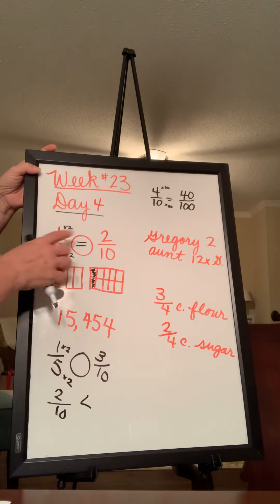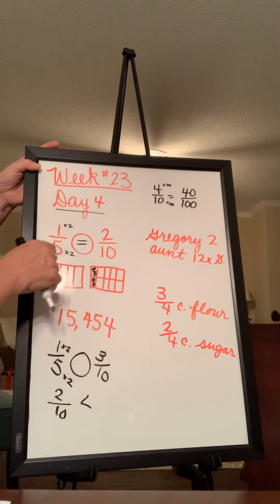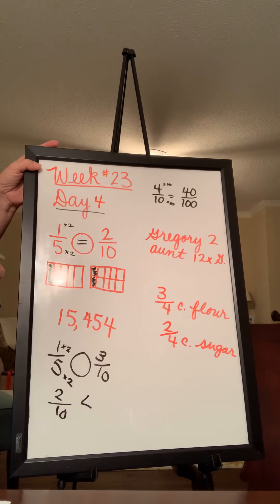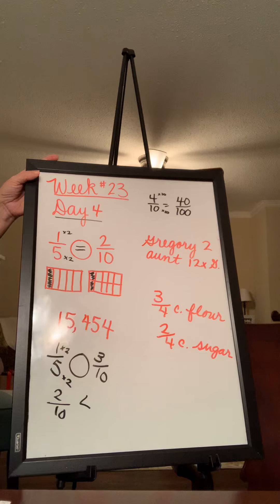But anyway, hopefully that kind of makes sense. If not, just don't worry about it. Just look at the top. But they are equal because we multiply both by two and because you can draw it and see that they are the same.